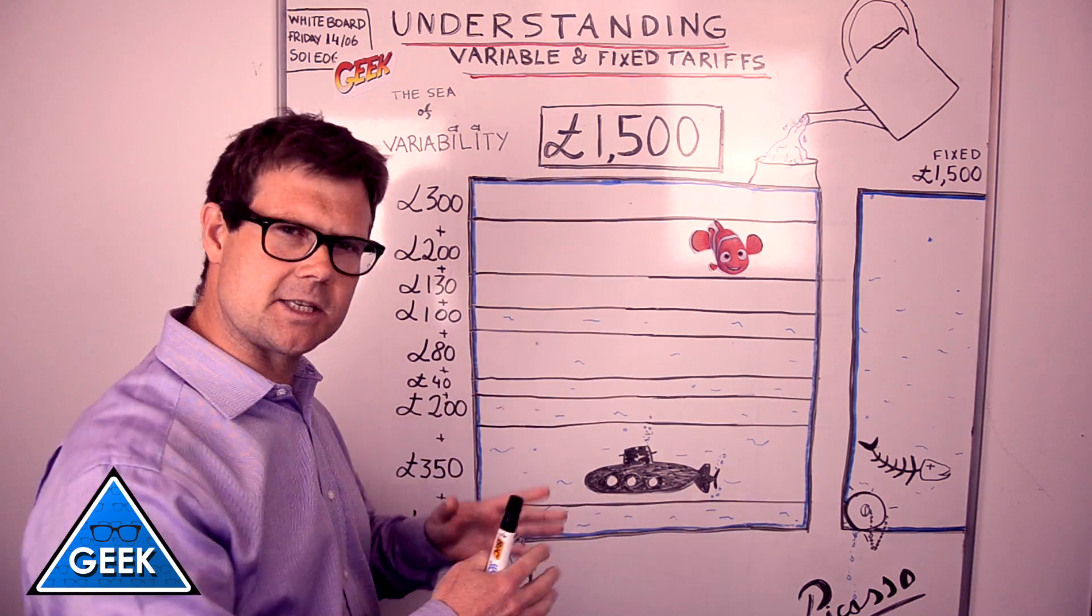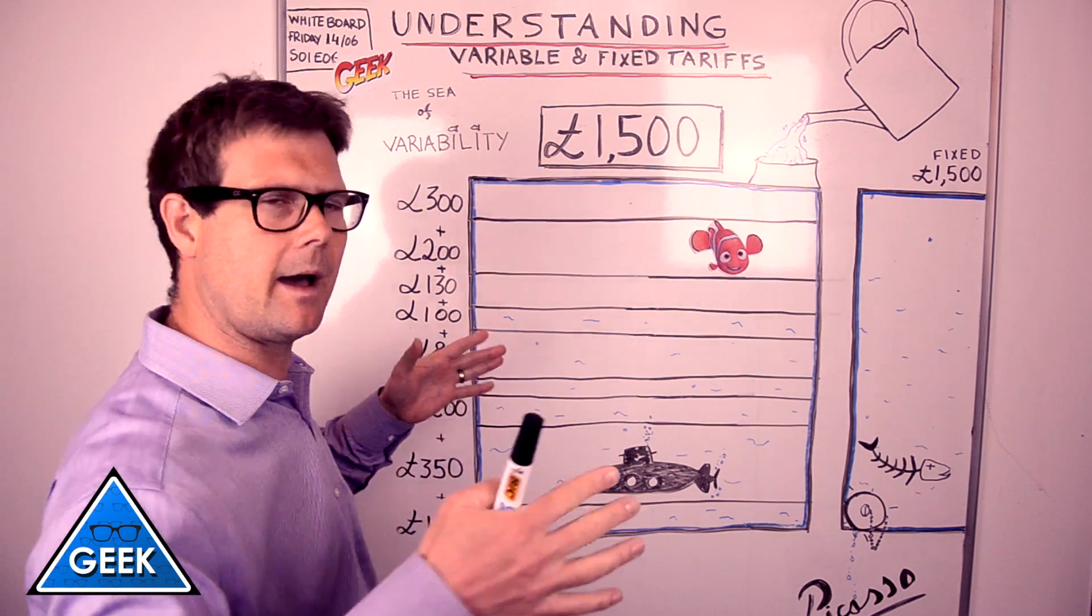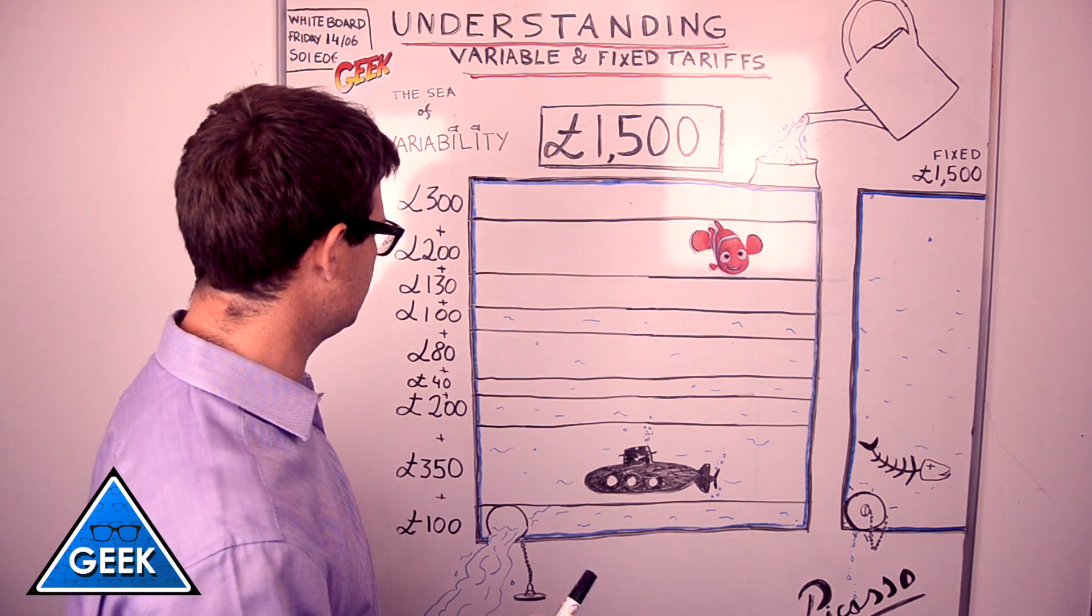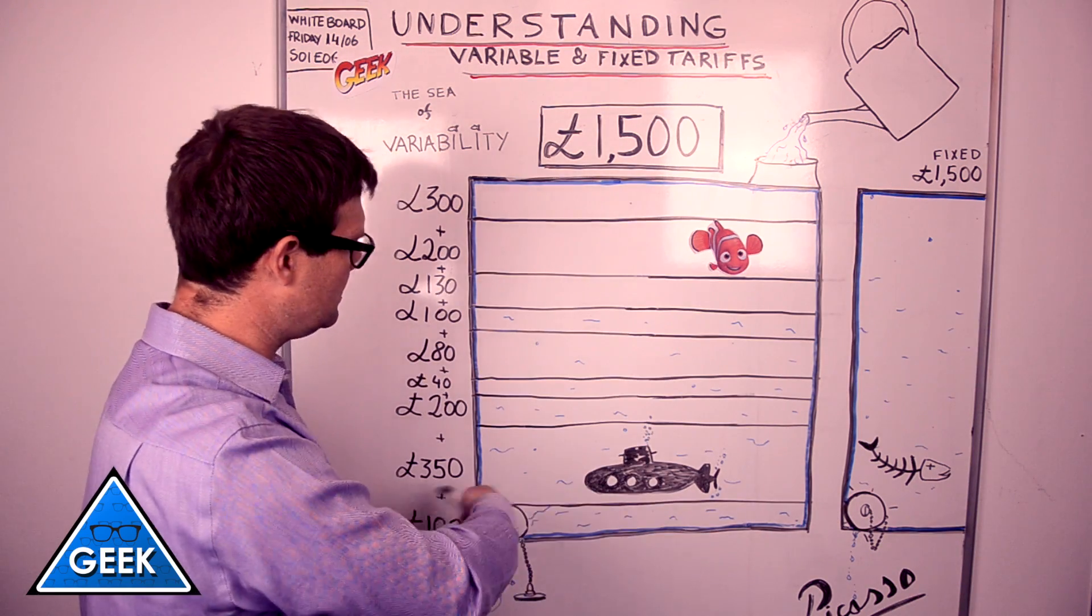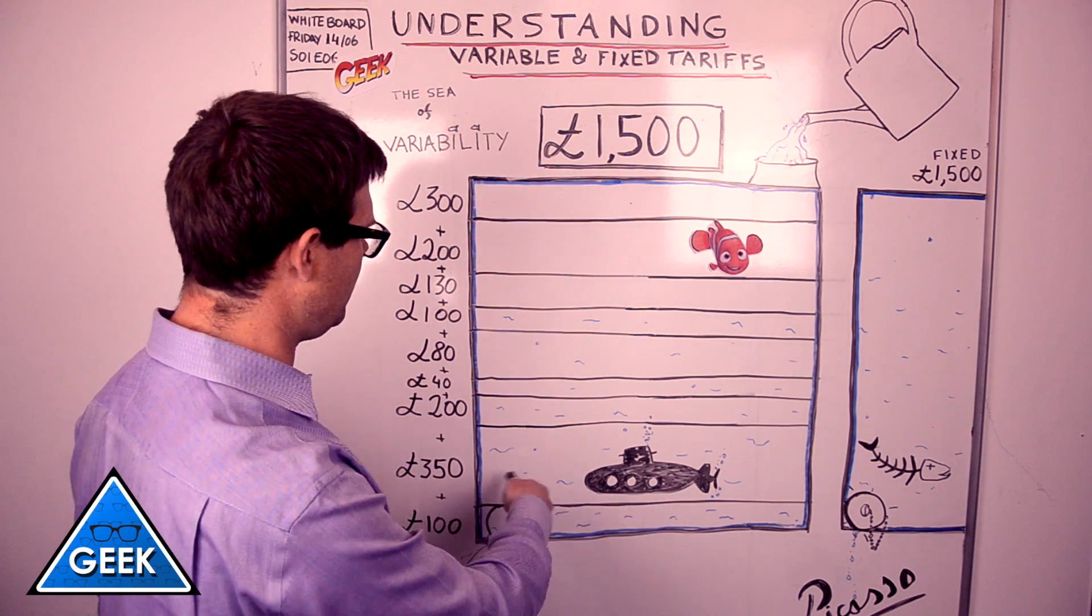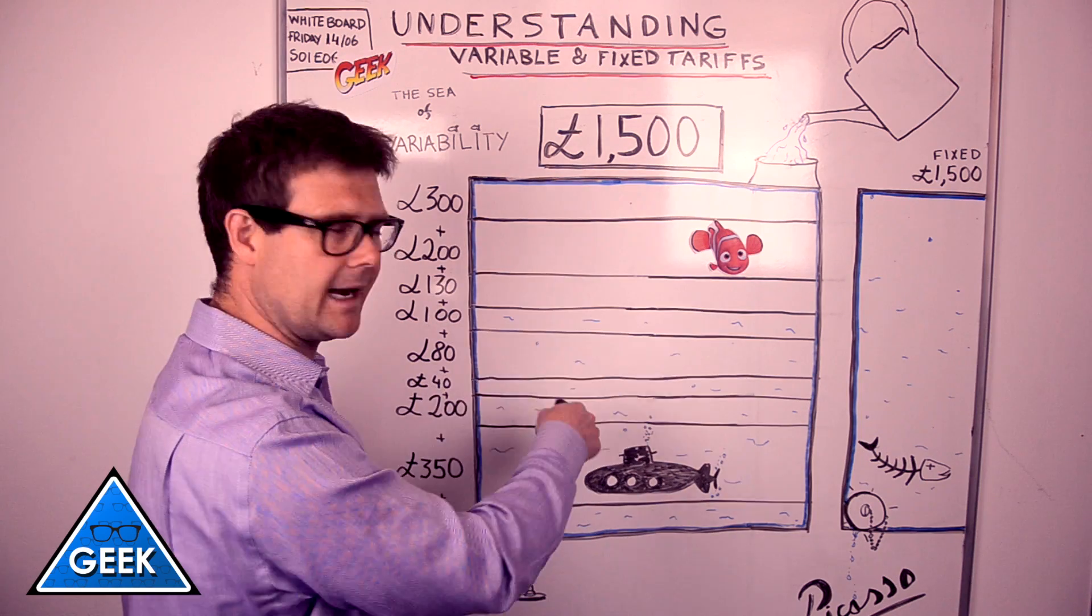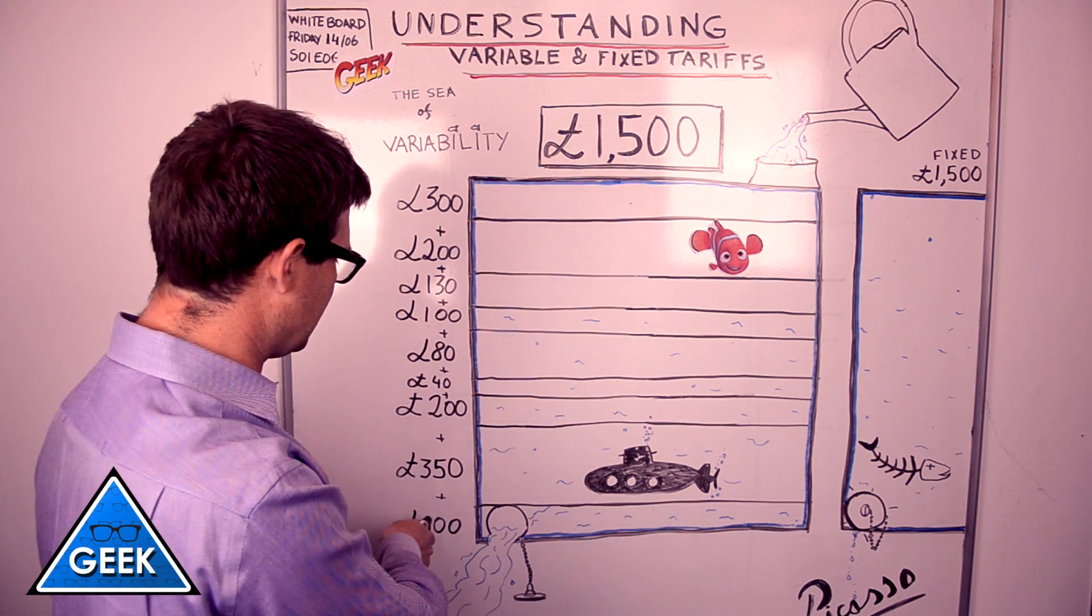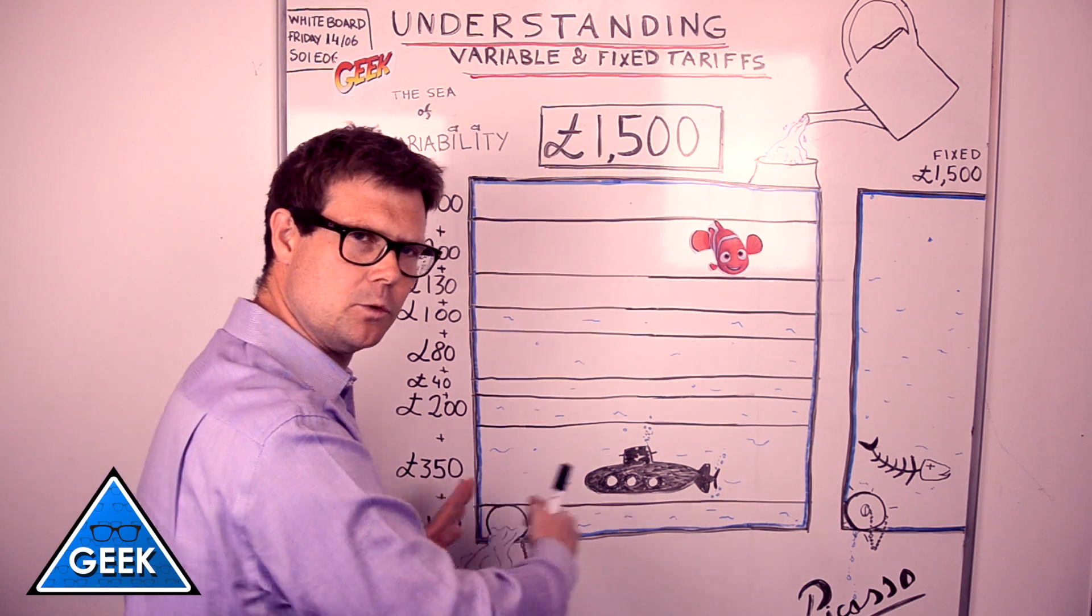That tank of energy exists in a wider sea of variability that the supplier has where they are buying much more electricity and gas. Now the interesting thing here is that to fill up your tank, suppliers have bought electricity and gas over a period of time. That tends to sink to the bottom if we're using the analogy of water here.